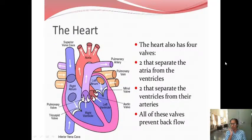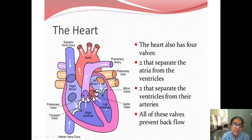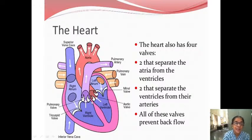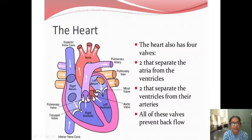The heart has four valves. Separating the right atrium from the right ventricle is one valve, and the left atrium from the left ventricle is one valve. The AV valves — between the atria and ventricles — on the right side is the tricuspid valve, and on the left side between the left atrium and left ventricle is the mitral valve or bicuspid valve.